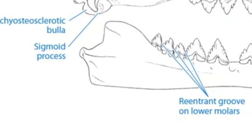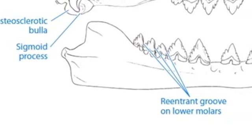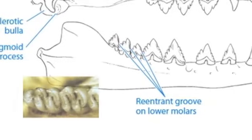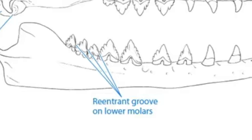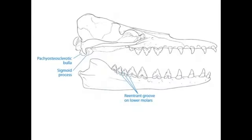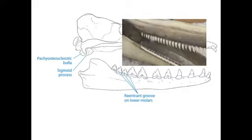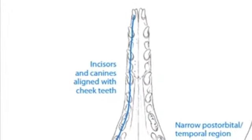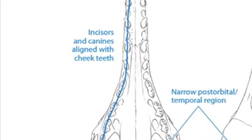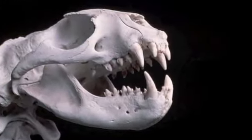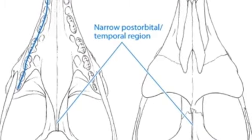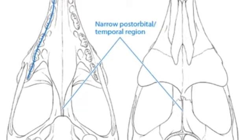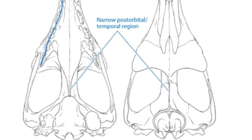Some other diagnostic characters of particular importance regarding archaeocetes include re-entrant grooves on the front side of the lower molars. Re-entrant grooves are infoldings of tooth enamel that make teeth better suited to grinding and shearing, and can also be found on the molars of many ungulates and rodents. The presence of molars is a character state that has since been lost — nearly all modern toothed cetaceans are homodont, meaning they have uniform, undifferentiated teeth. The canines and incisors of archaeocetes also line up with the cheek teeth, unlike most other mammals. Finally, archaeocetes are distinguished by a temporal post-orbital skull region that is very long and narrow — the area behind the nasal bones between the orbits or eye sockets.